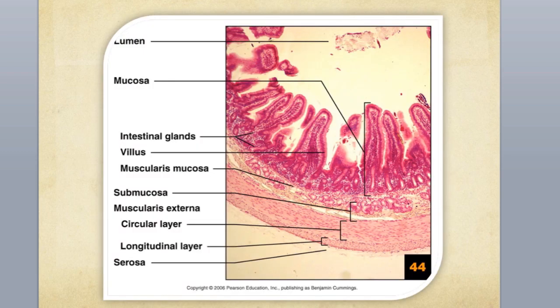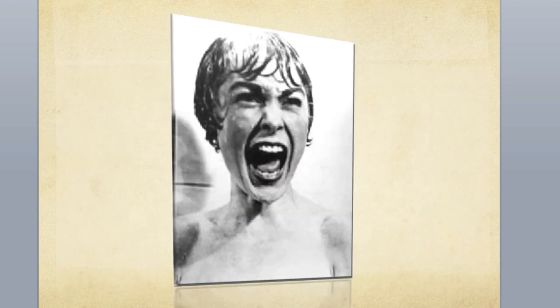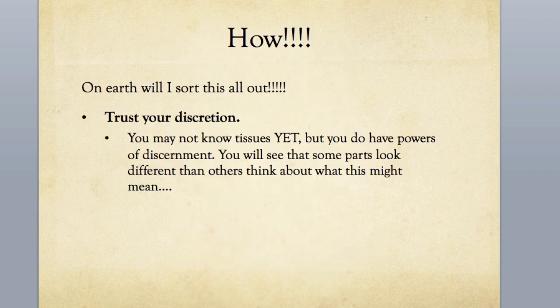You'll also be looking at slides, and some of the slides will look like this one — they'll have a lot of different looks to them. You can see here we have some very darkly staining areas that look pretty different than a middle portion that's light and dark, and then areas that look completely different again. You'll see situations where there's a bunch of different things going on in the tissue, maybe at different magnifications, and you may think, 'How on earth am I going to sort this out?'